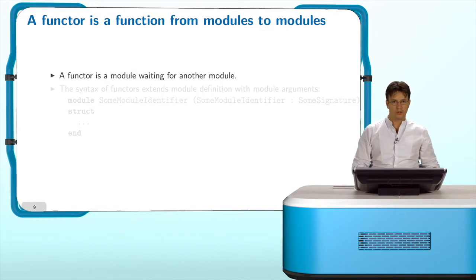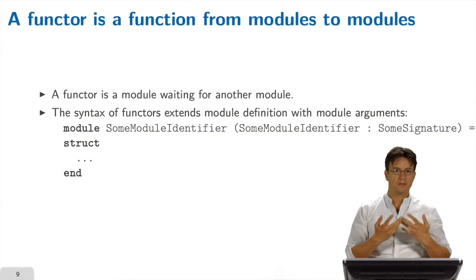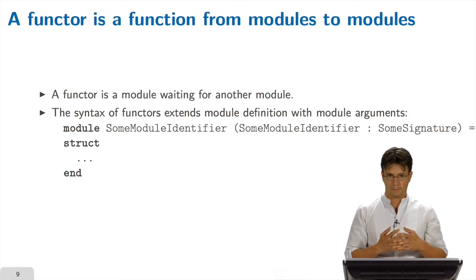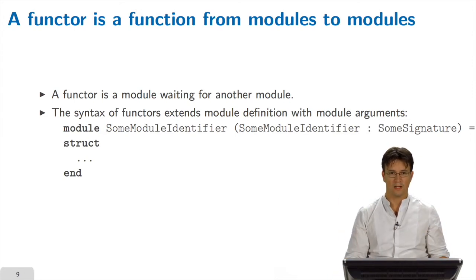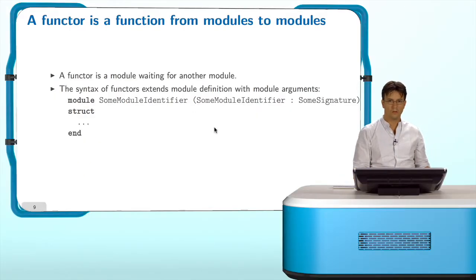A functor is a function from modules to modules. A functor is a module waiting for another module. The syntax to define a functor mimics the definition of a function. You start with a standard syntax for module definition, and you just add, after the identifier, as an argument, the module that you are expecting. This module must be constrained by some signature. In that case, OCaml is unable to infer the type of the module of a functor argument.